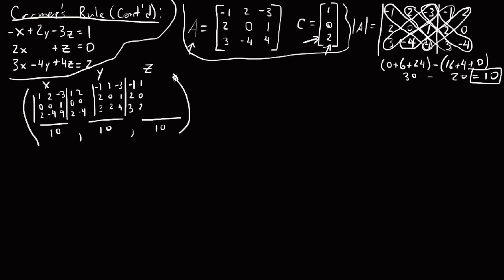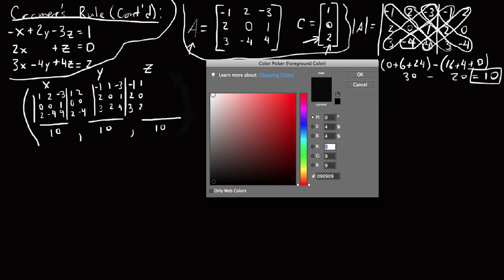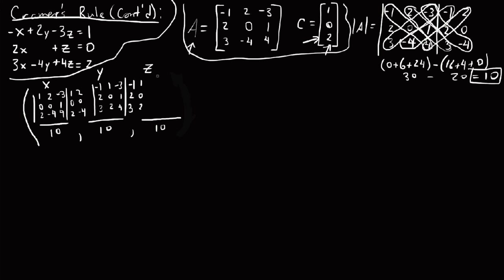And in the very last column, last but not least, we say our z matrix. But in this case, we're inserting, of course, our constants in for our z column. So now we've got negative 1, 2, and 3, 2, 0, and negative 4. And last but not least, we have our constants in here. So we say 1, 0, 2. And if at any time you think you've got the hang of this, you can always pause the video and stop listening to me ramble on. 2, 0, and negative 4.